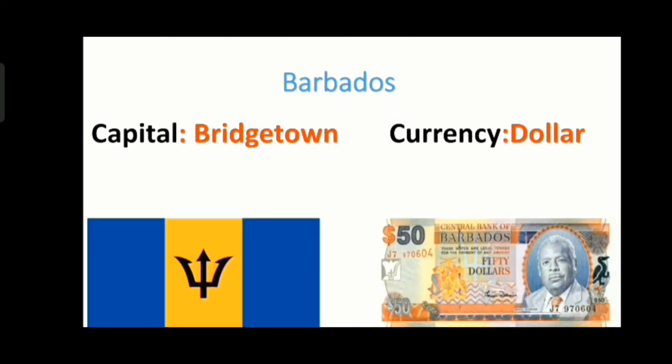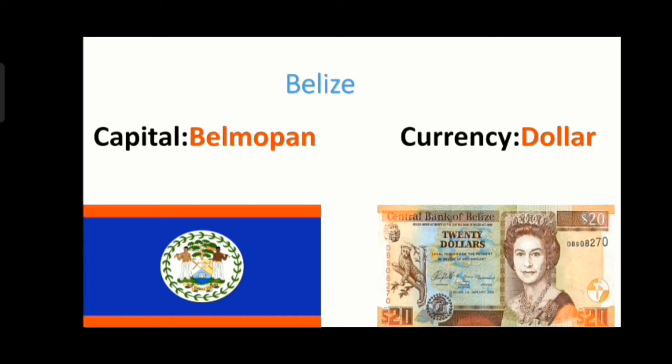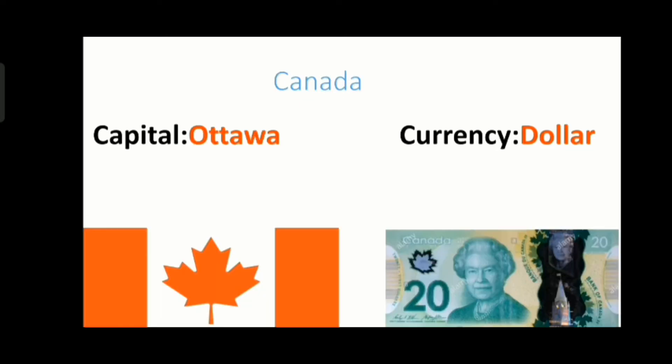The currency of Bahamas is dollar. The next country is Barbados and its capital is Bridgetown and its currency is dollar. The next country is Belize and its capital is Belmopan and its currency is dollar. The next country is Canada and its capital is Ottawa and its currency is dollar.